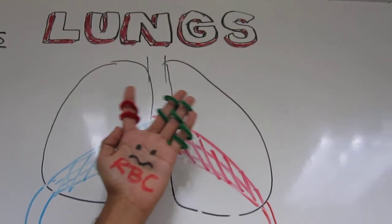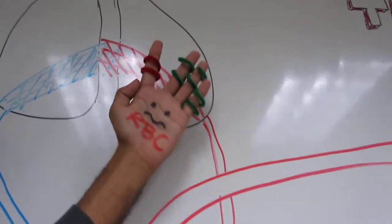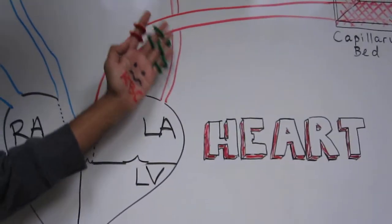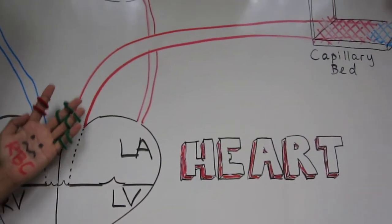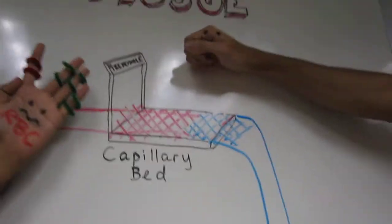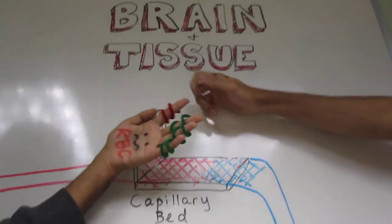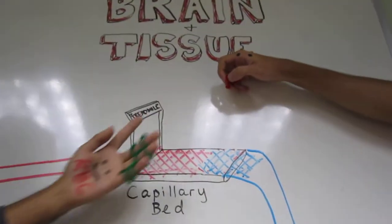The red blood cells travel to the heart again, into the left atrium, and then the left ventricle, and then into the aorta to the systemic tissues. The oxygen is consumed, but the carbon monoxide remains so tightly bound to the hemoglobin.